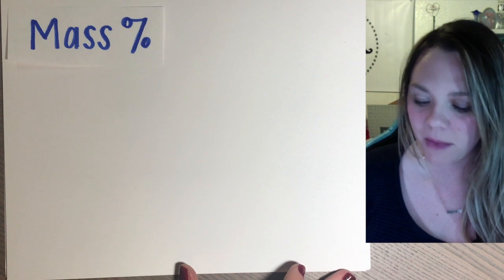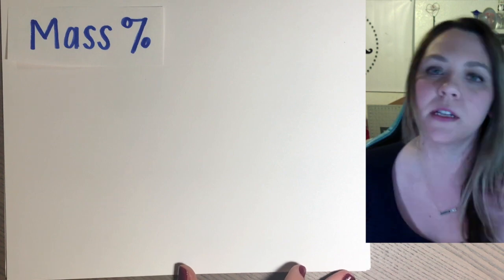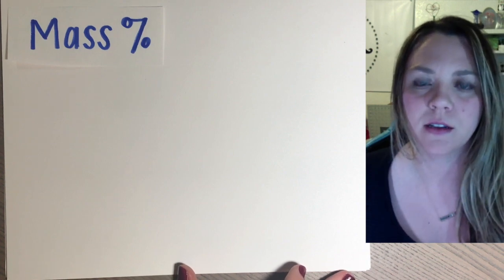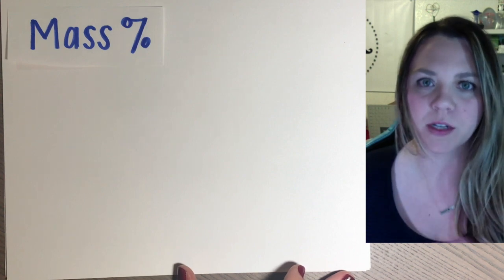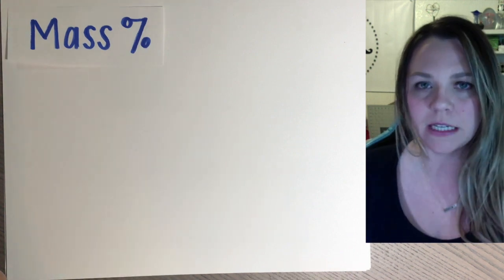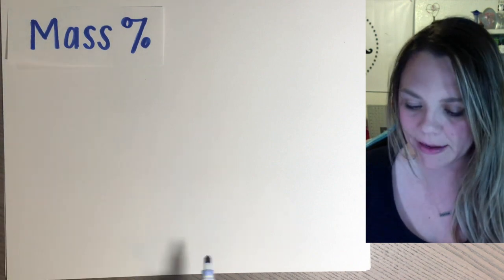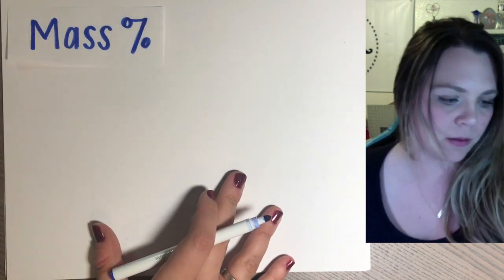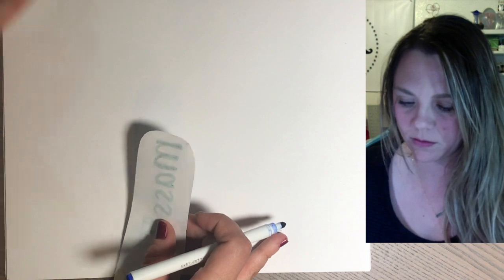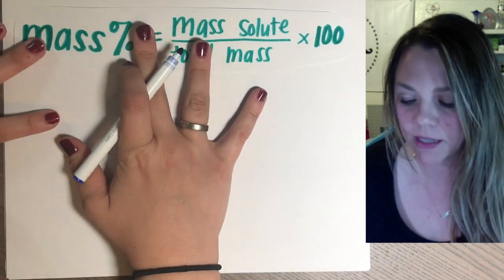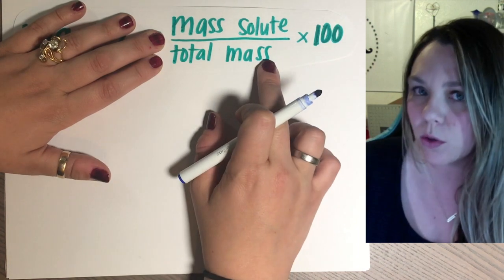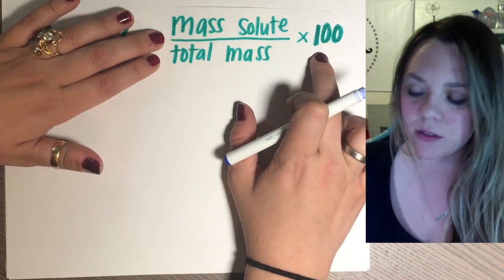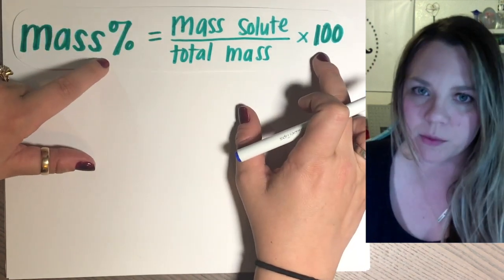Okay, mass percent. So mass percent is one way that we look at the concentration of a solution, which means how much solute is actually dissolved in the solvent. And it's a really easy one. Mass percent is the mass of your solute divided by the total mass times 100, because it's a percent.